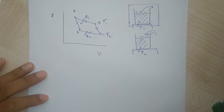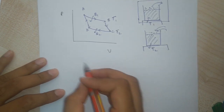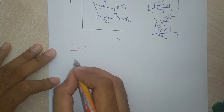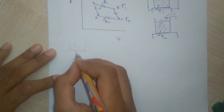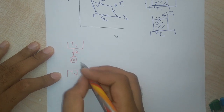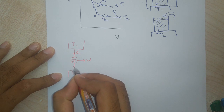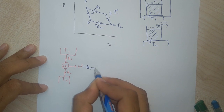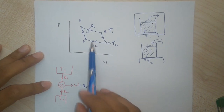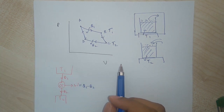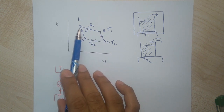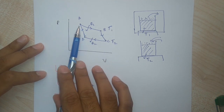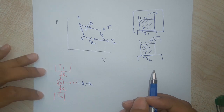From point D we adiabatically compressed the gas to reach point A. The schematic of this has a reservoir at temperature T1, a reservoir at temperature T2, and the Carnot engine in between. Q1 amount of heat was taken in, some work was done, and Q2 amount of heat was rejected. The work done was equal to Q1 minus Q2. This process going along this path is a cyclic process — the gas comes back to the starting point — and we can do this any number of times.